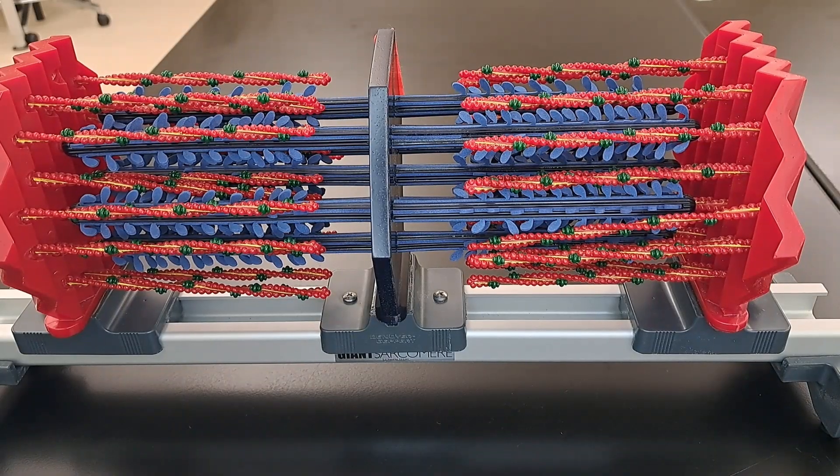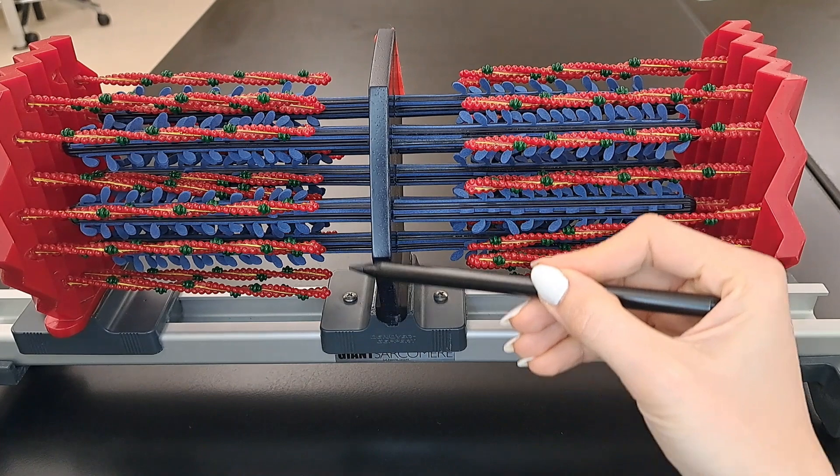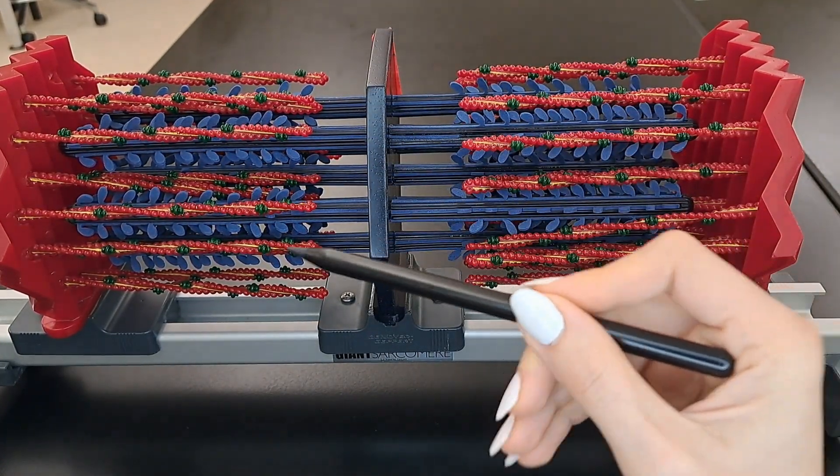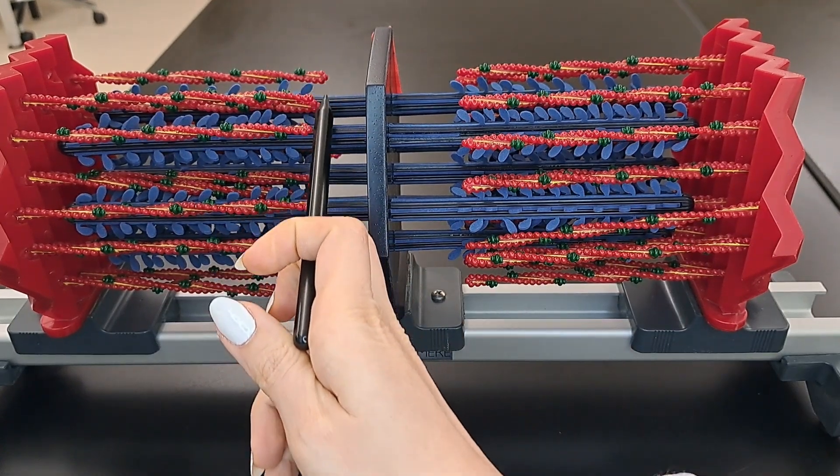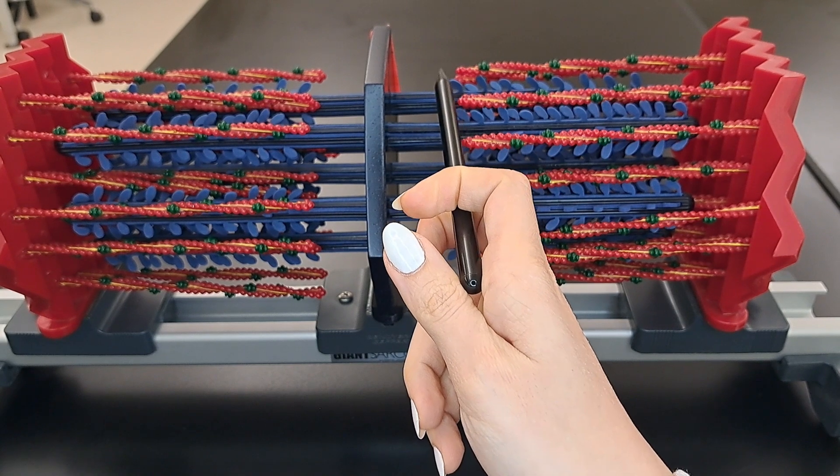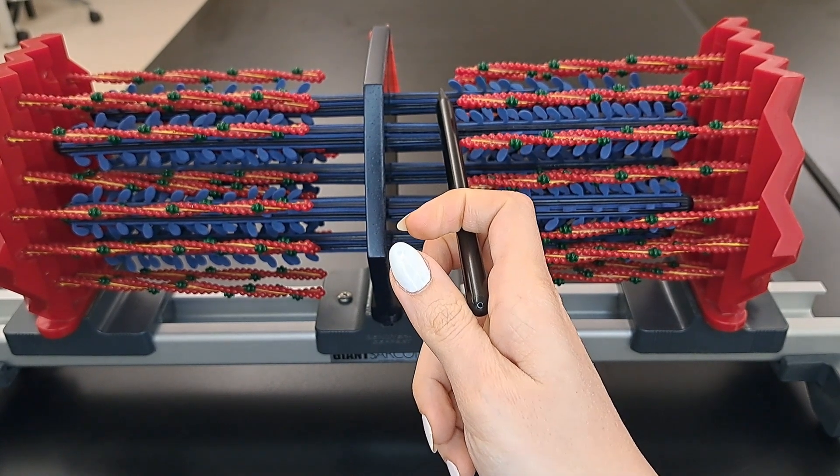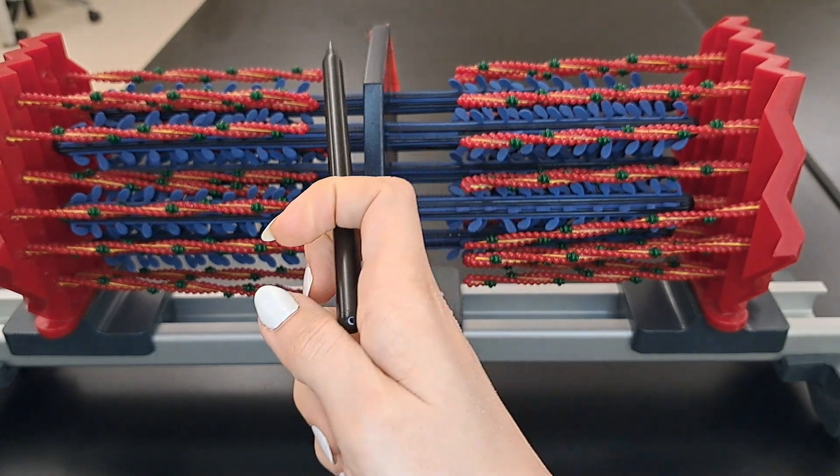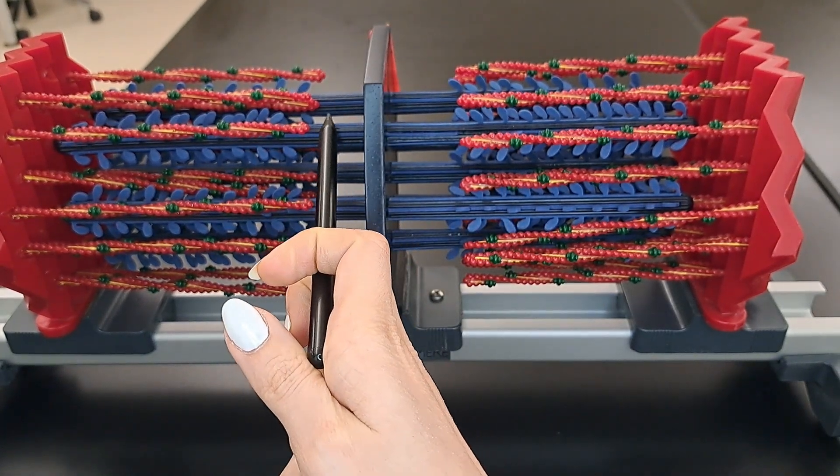At the center of the sarcomere, we have the M line. The H zone of the sarcomere extends from this point to this point right here. The H zone only contains the thick filaments, M line, and the thick filaments on this side.